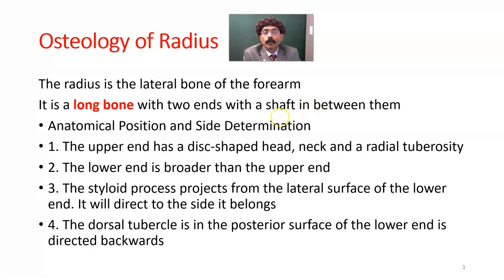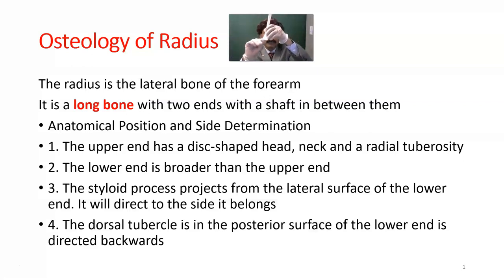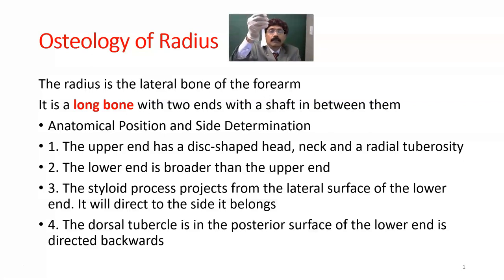The radius is the lateral bone of the forearm. It is a long bone because it has two ends with a shaft in between. For anatomical position and side determination: the upper end has a disc-shaped head. The lower end is broader than the upper end. The styloid process projects from the lateral surface of the lower end, directing the side it belongs to — in this case, it is going to the left side, so this is the left radius.